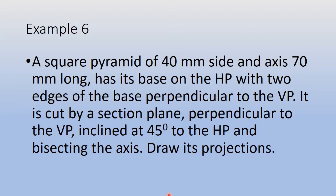Example 6. A square pyramid of 40 mm side and axis 70 mm long has its base on the HP with two edges of the base perpendicular to VP. It is cut by a section plane perpendicular to the VP, inclined at 45 degrees to the HP and bisecting the axis. Draw its projections.